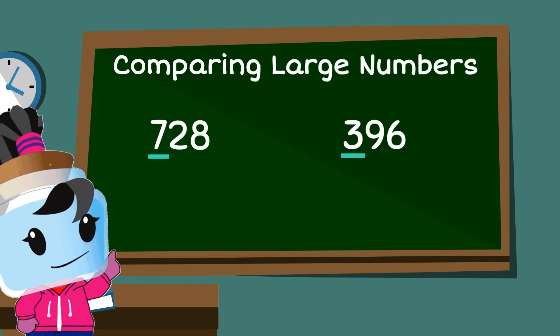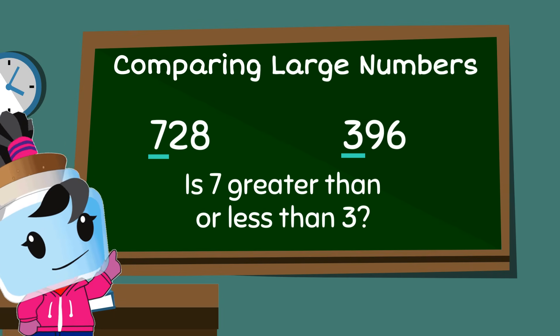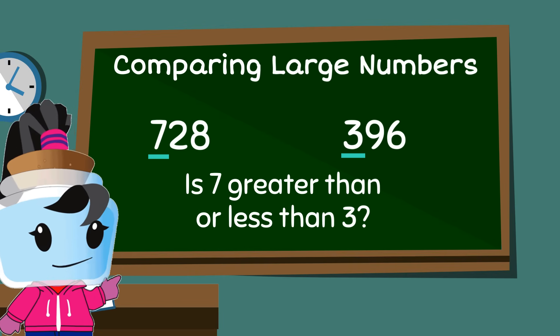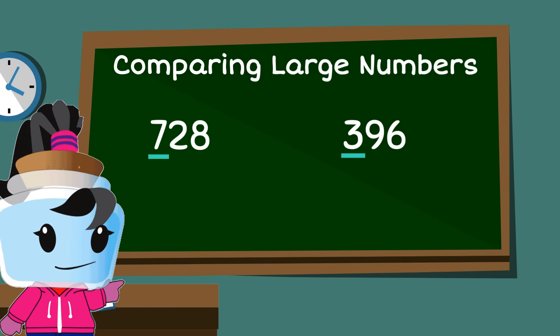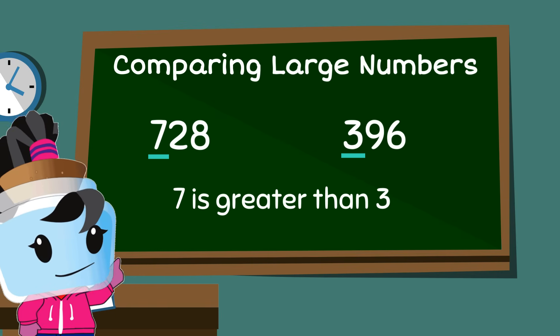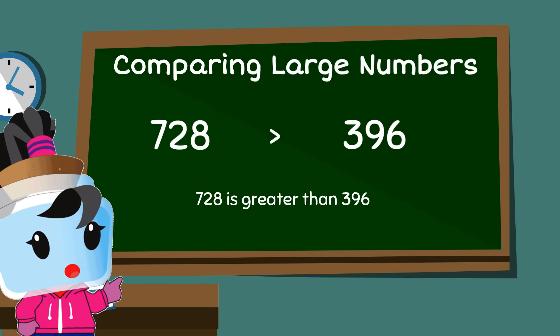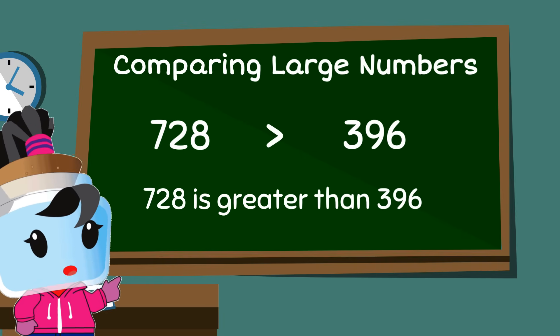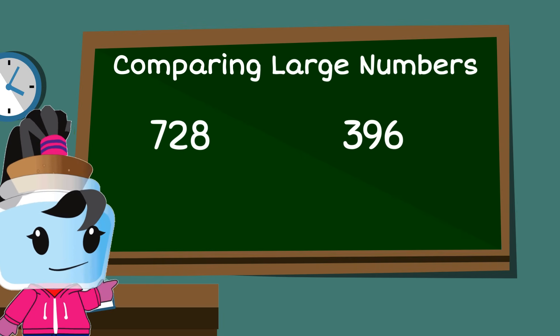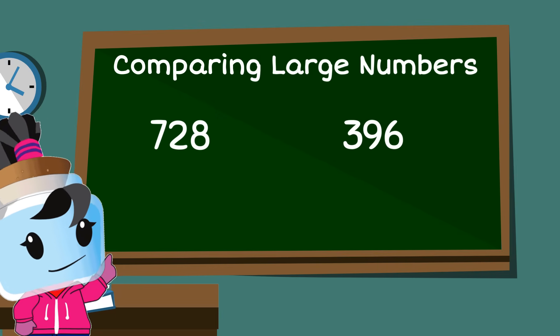Is seven greater than or less than three? You got it! Seven is greater than three. That means 728 is greater than 396. Well, how about if we change three to seven?